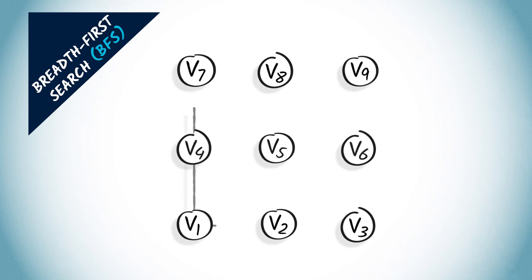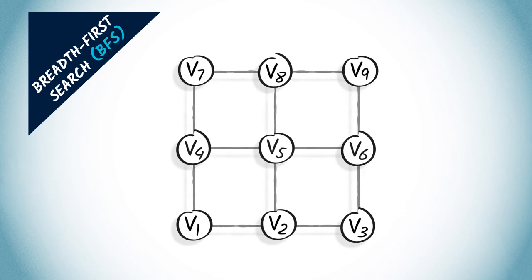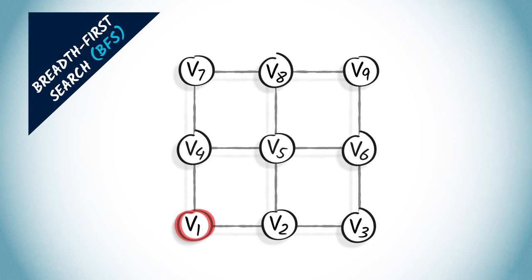The other approach I will describe here is a breadth-first search. When using a breadth-first search, or BFS, we explore the graph by gradually increasing the number of hops from the initial vertex. Let us consider the same example, where we start in V1.